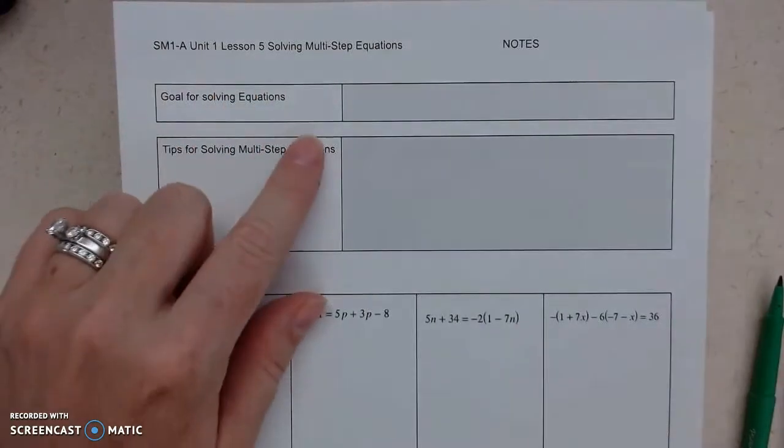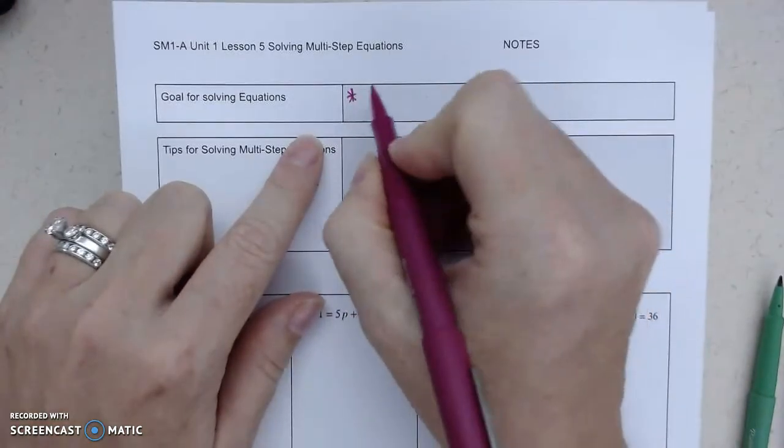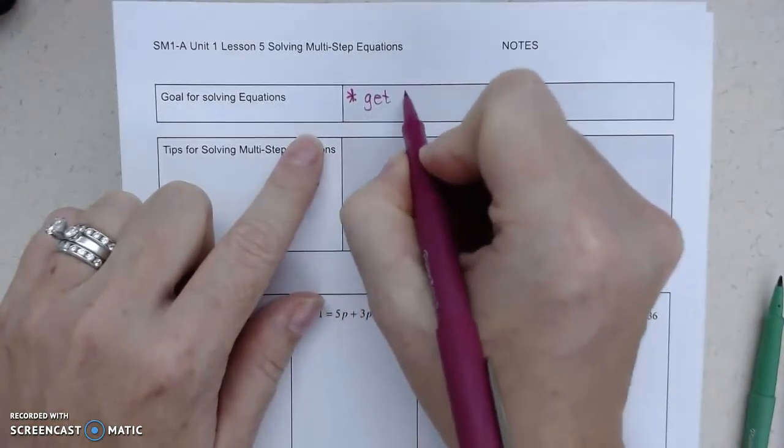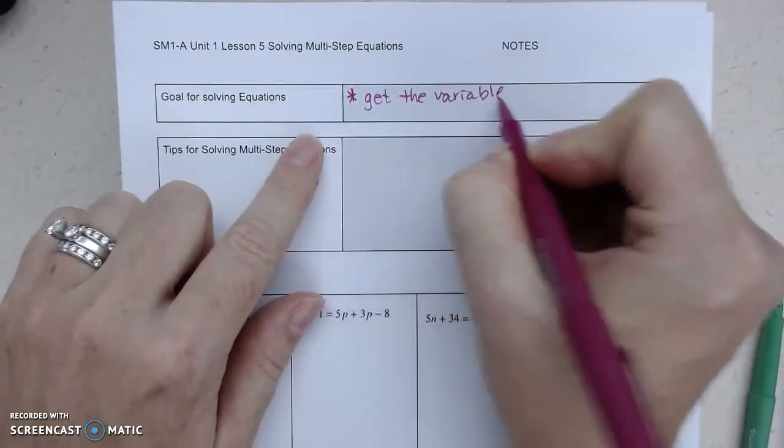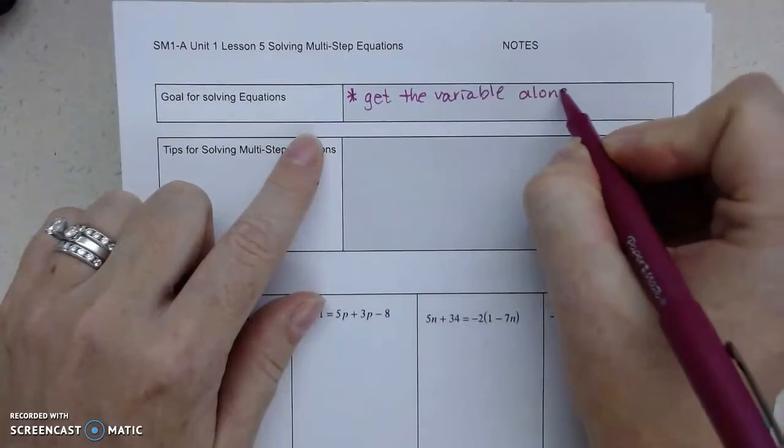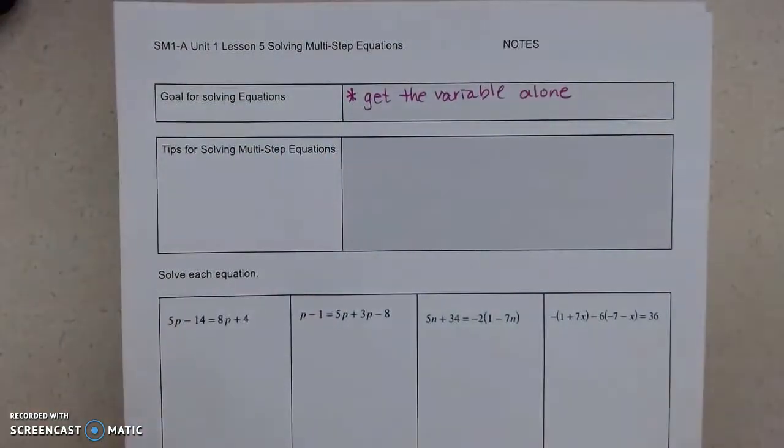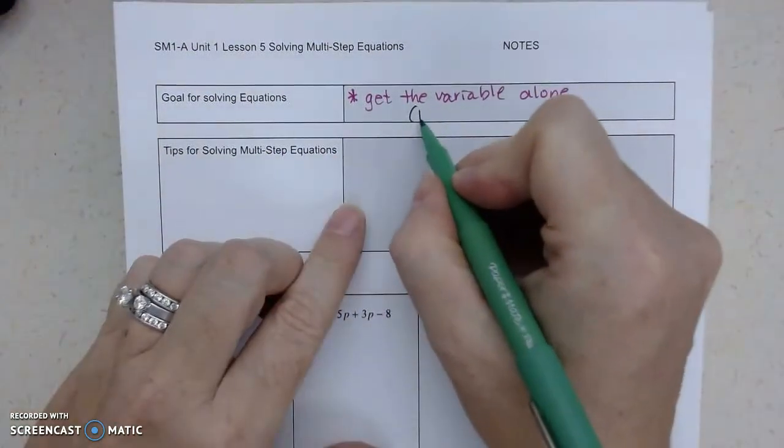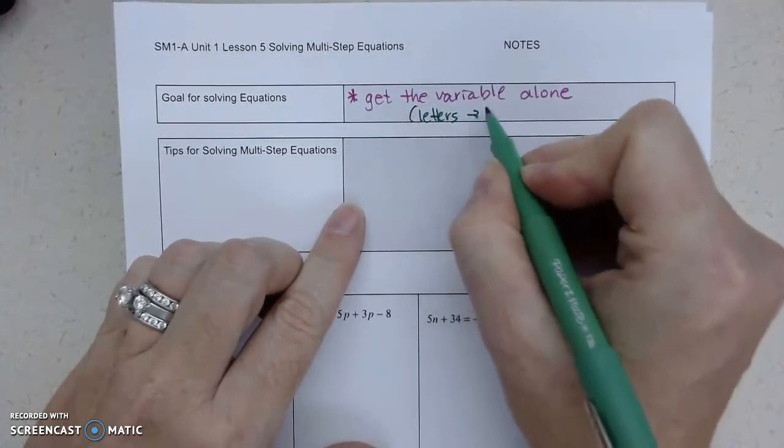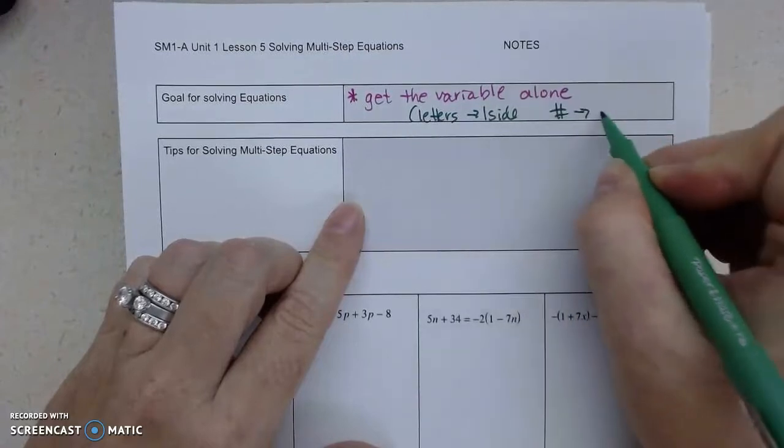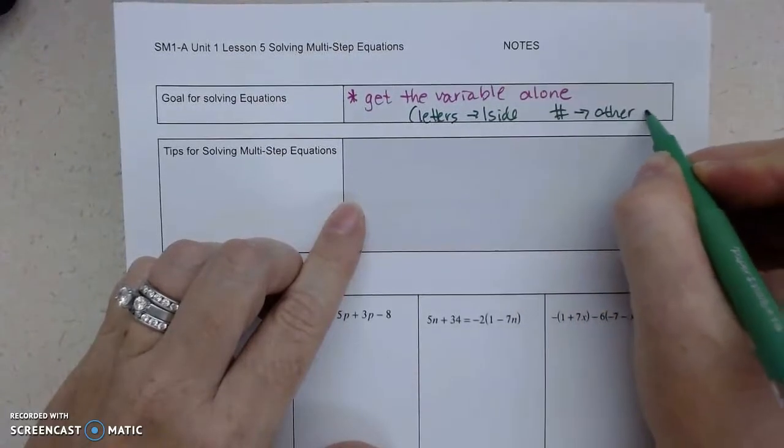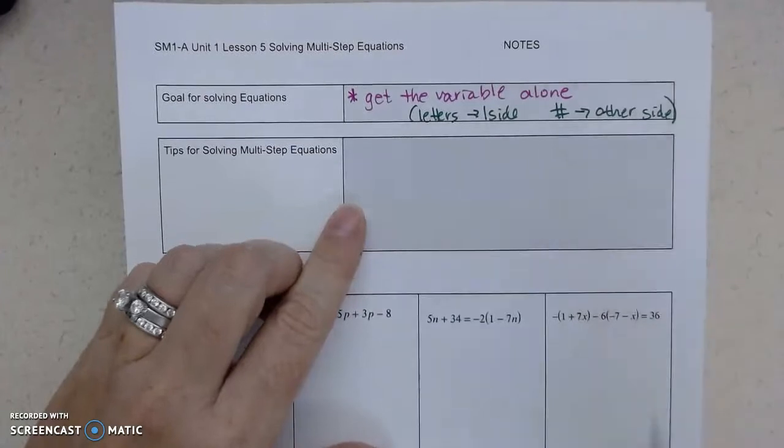So our goal overall is to get the variable alone. Now, however, in order to do that, what we want to do is get all the letters to one side and all the numbers to the other side. It doesn't matter if you do the left or the right, you just get to pick.